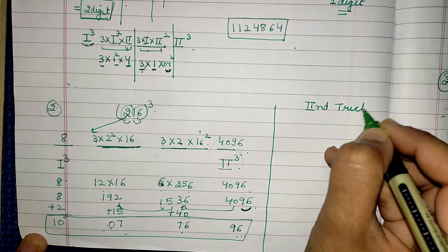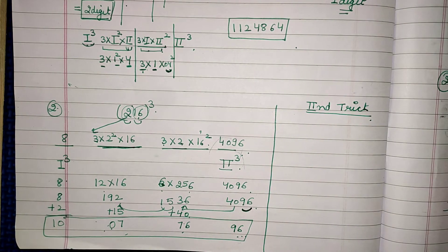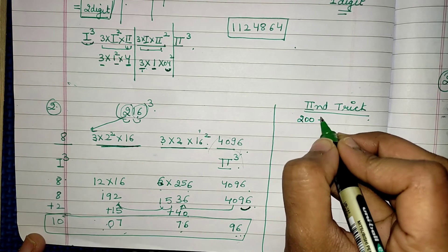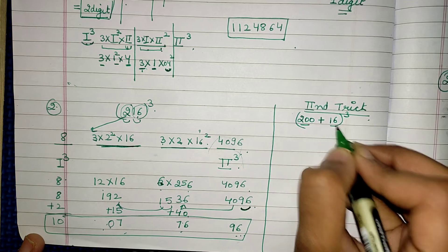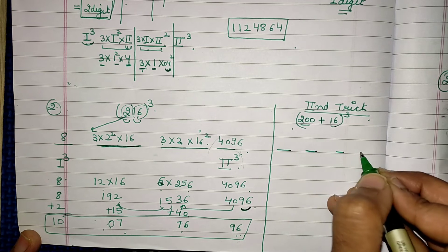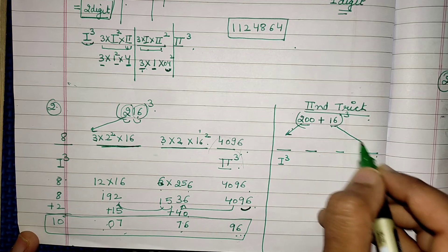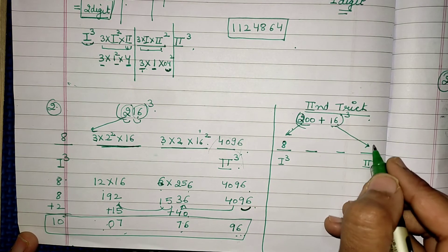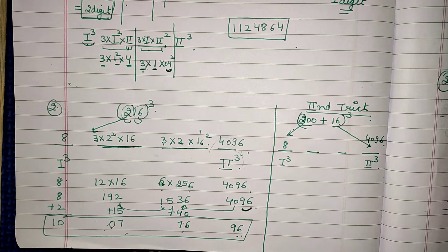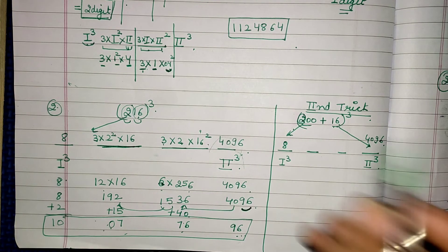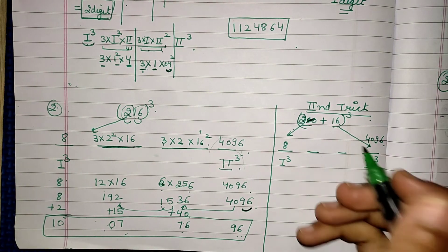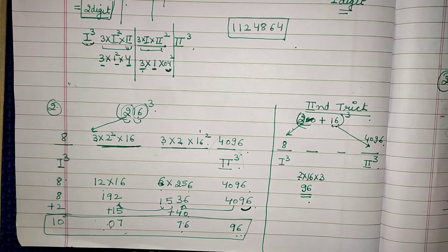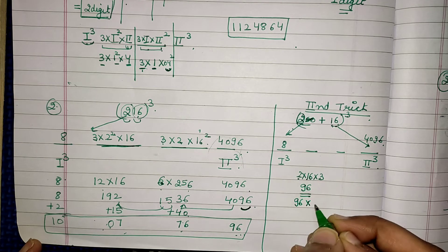Now using the second trick — as I explained two tricks in my previous video, I am explaining two tricks here as well. I write 216 as 200 plus 16 cube. I again divide the answer into four parts. The first part is the cube of the first number and the last part is the cube of the second number: 2³ = 8 and 16³ = 4096. For the middle step, we multiply 2 × 16 × 3 = 96.